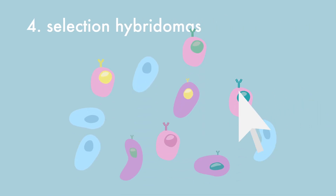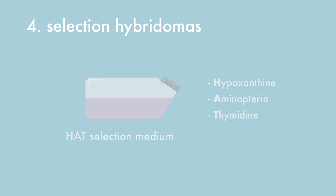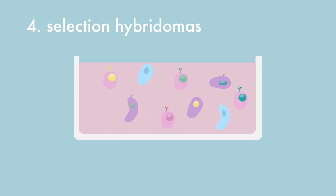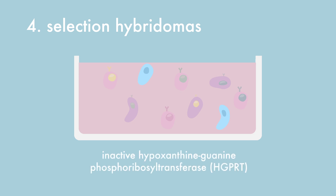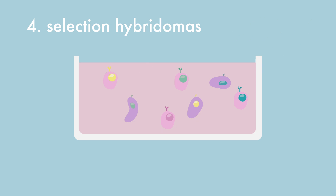To select hybridoma cells from the excess of non-fused lymphocytes and myeloma cells, the cells are grown in HAT selection medium. The culture medium contains hypoxanthine, aminopterin and thymidine. The myeloma cell lines used contain an inactive hypoxanthine-guanine phosphoribosyltransferase (HGPRT), an enzyme necessary for the salvage synthesis of nucleotides. The lack of HGPRT activity is not a problem normally because myeloma cells can still synthesize purines de novo. However, by exposing cells to aminopterin, de novo synthesis of purines is also blocked and these cells will not survive. Selection against unfused lymphocytes is not necessary since these cells, like most primary cells, do not survive long in cell culture.